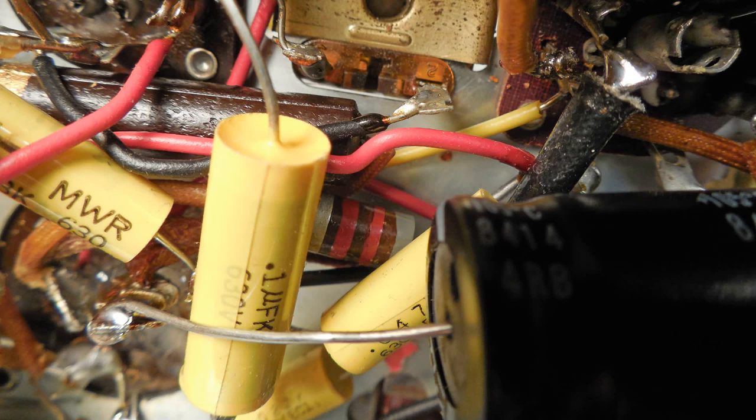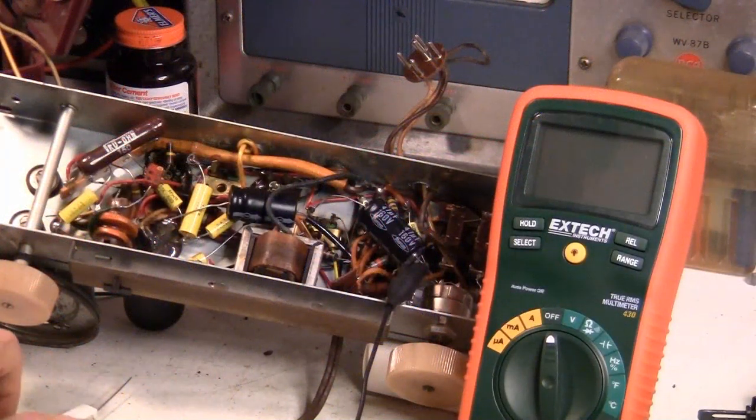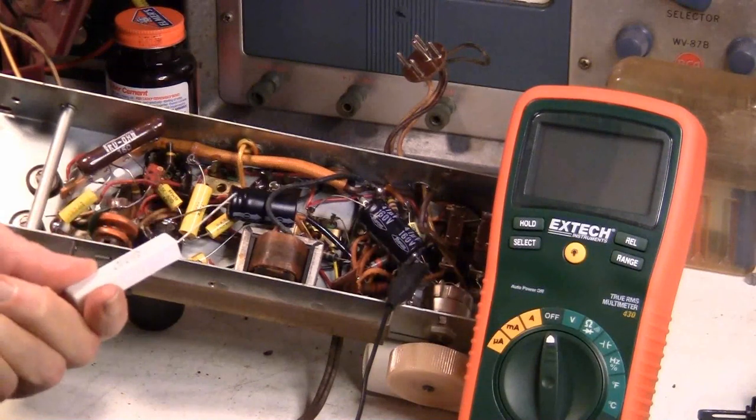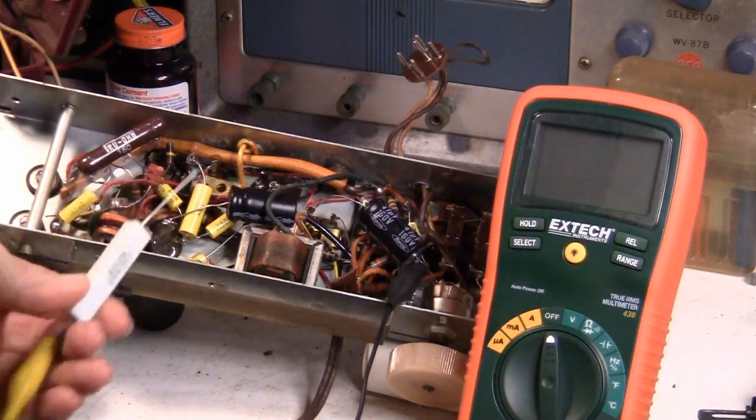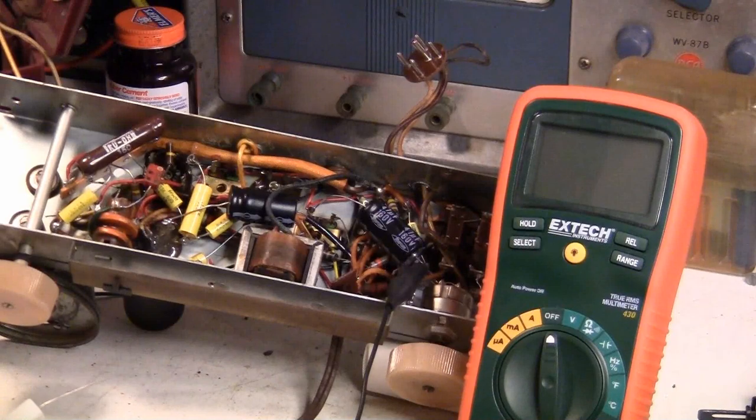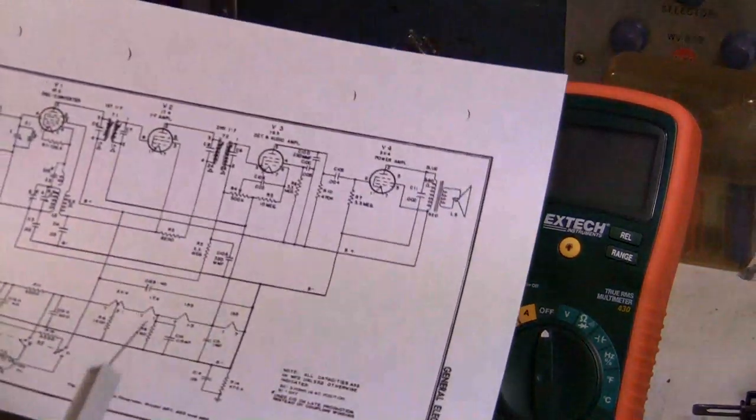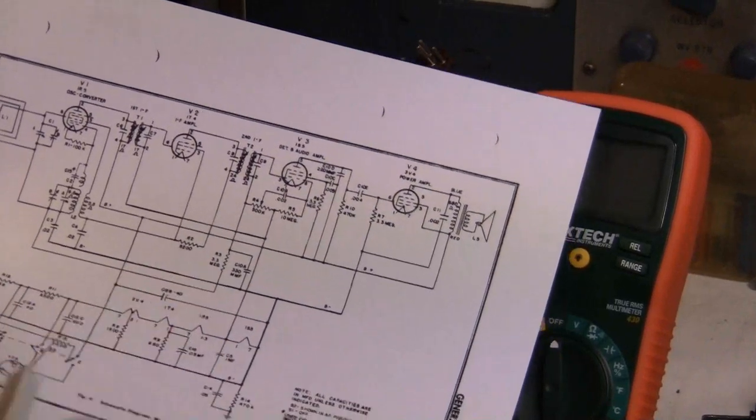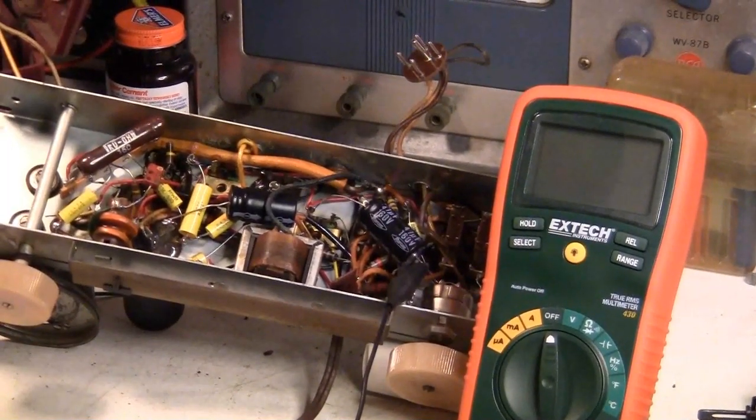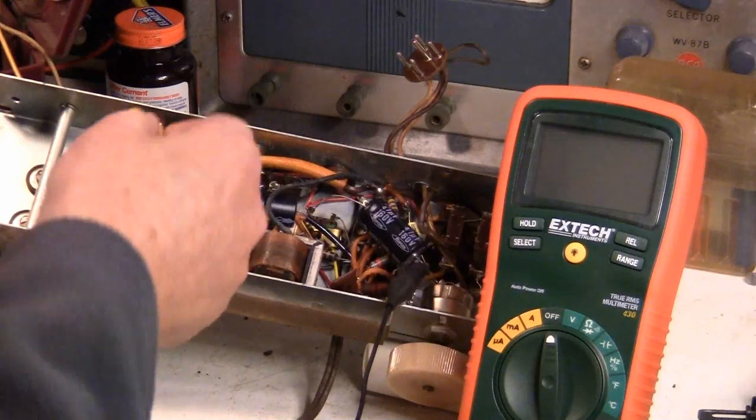So now I'm going to show you how I prove that by substituting a resistor for that, the radio should work. This is a 10K resistor. It was just handy. After I figured out what I think was going on as that resistor is open,